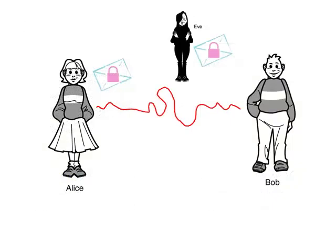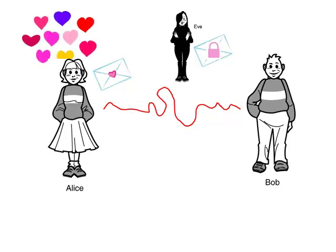So here we are. Both Alice and Eve have locked copies of the letter, but only Alice is able to read Bob's message. It's cryptography — just wonderful. Meanwhile, Eve is still scratching her head trying to figure out how to unlock it.